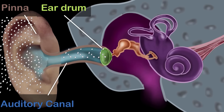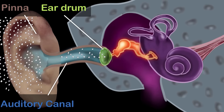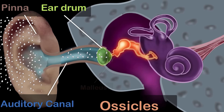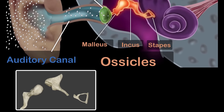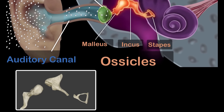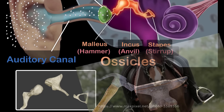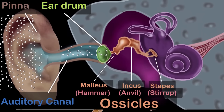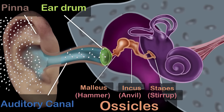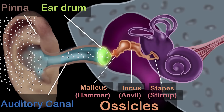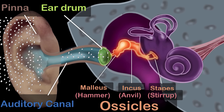This brings us to the middle ear, which consists of the three tiniest bones of the human body, together called the ossicles. They have pretty cool names: the malleus, the incus, and the stapes. And here is the actual picture of these three bones. Because of their shapes, they are also commonly called the hammer, the anvil, and the stirrup — stirrup being where you rest your feet when riding a horse. As the eardrum vibrates, the ossicles also start vibrating, transferring the vibrations from the eardrum to the inner ear.